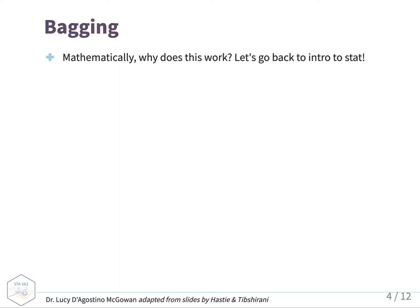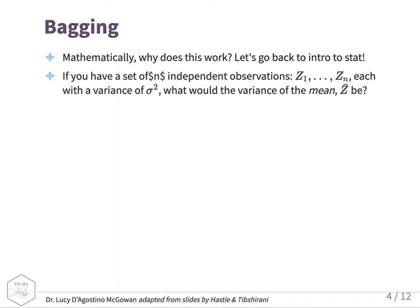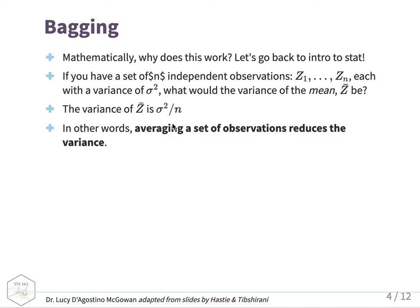So mathematically, why does this work? We're going to go back to intro to statistics — this should be a little bit of a refresher. If you have n independent observations Z1 to Zn, and each has a variance of sigma squared, the variance of the mean Z-bar is going to be sigma squared over n. If you take the square root, that'd be the standard error. In other words, averaging a set of observations reduces the variance.